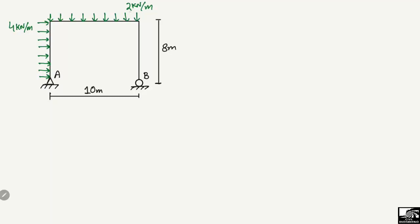The vertical load is 2 kilonewton per meter, distributed over the length of 10 meters along the whole length of the beam. There is also a 4 kilonewton per meter lateral load acting on one column, distributed over the whole length of the column, which is 8 meters.